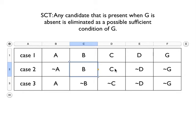If you look in case two, we see that both B and C are present there, and G is absent. That means that we can eliminate both B and C as sufficient conditions for G.